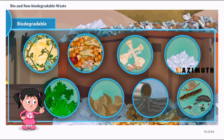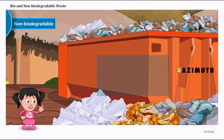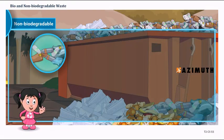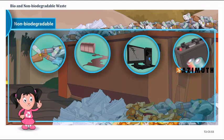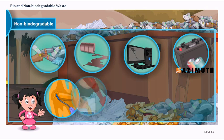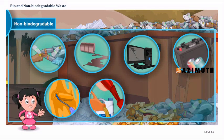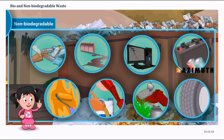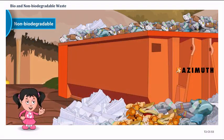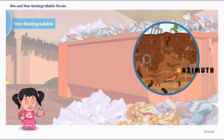Non-biodegradable waste examples include plastics, nuclear waste, electronic trash, batteries, wall paints, varnish, motor oil, pesticides, chemicals, construction materials, and tires. These wastes cannot be broken down and do not get decomposed. As such, they pile up and spoil the fertility of the soil. Worse, some of these wastes are known to emanate harmful radiation into the atmosphere.